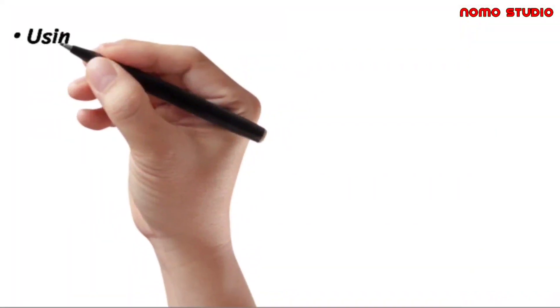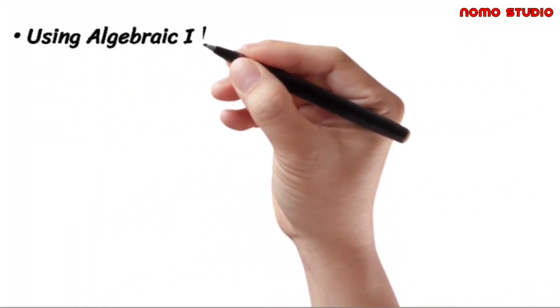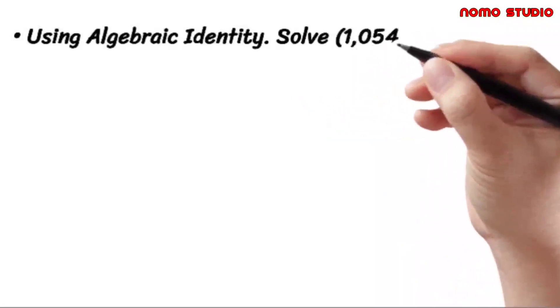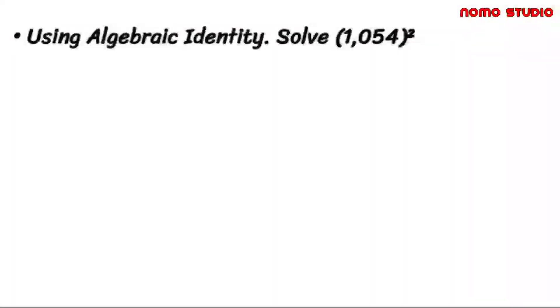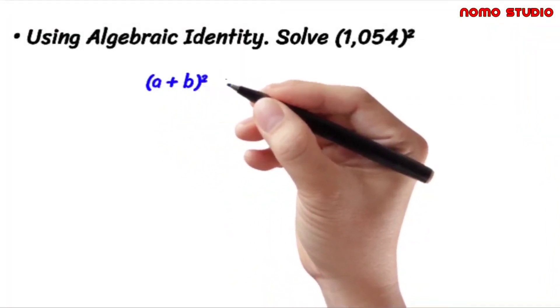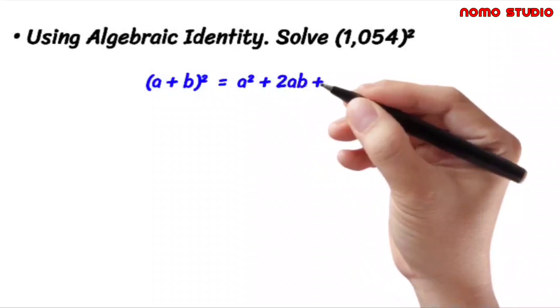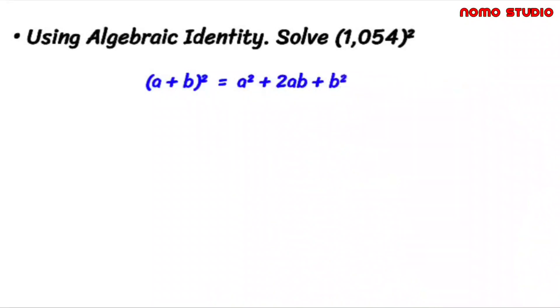In this video, let's try to solve this one using suitable algebraic identity. Let's recall that the quantity (a + b) squared is equal to a squared plus 2ab plus b squared. We get this through the FOIL method.